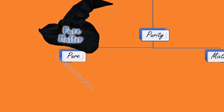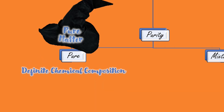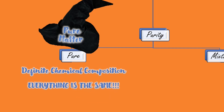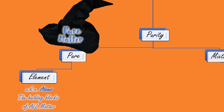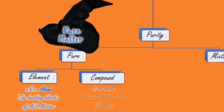Matter that is pure has a definite composition, meaning that the composition or the makeup of the substance is the same throughout the entire substance. Going another step further with pure matter, we have the most basic building blocks of all matter — elements — and compounds, which are a combination of two or more elements.